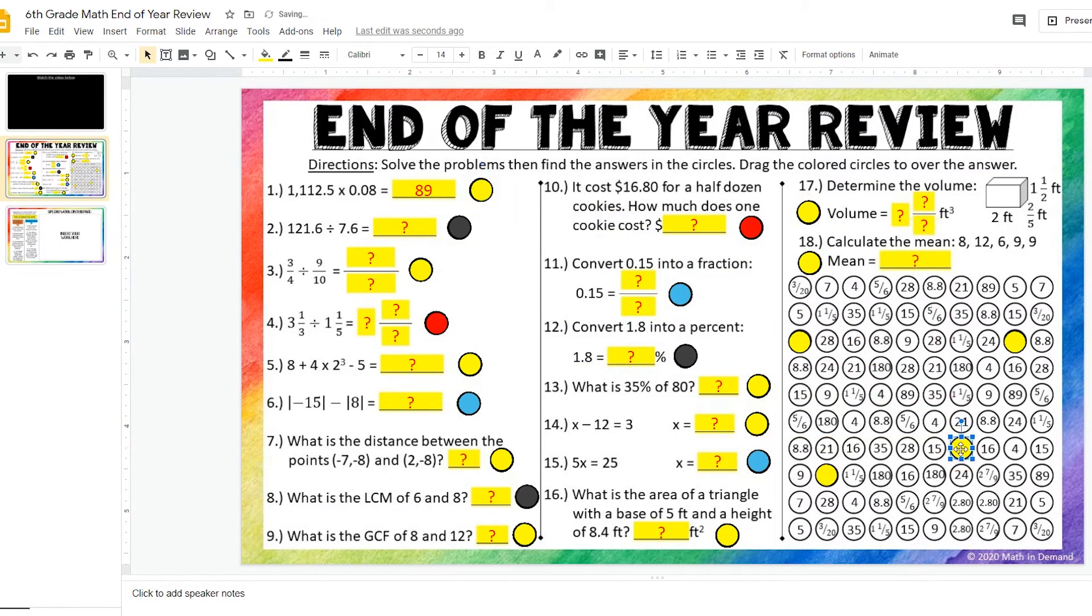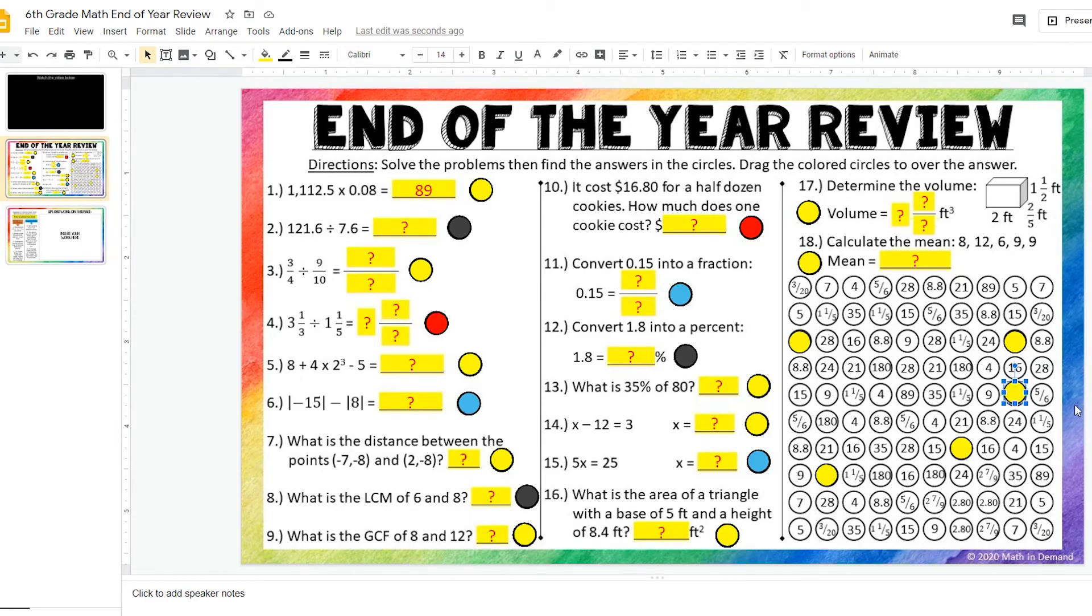Now, let's say that you can't get it perfectly on the circle. Let's say I get it like that and I am trying to move it and I can't get it perfectly on. What you are going to do is click on the circle to where it is highlighted, hold down the shift key, and then use the arrows to move it in whichever direction you need. So I can move that so that it is right on top of the circle.